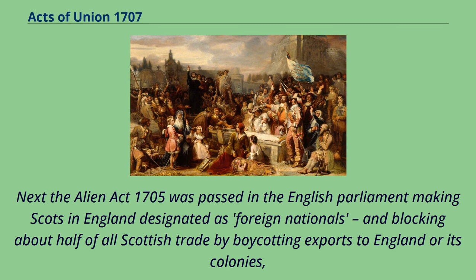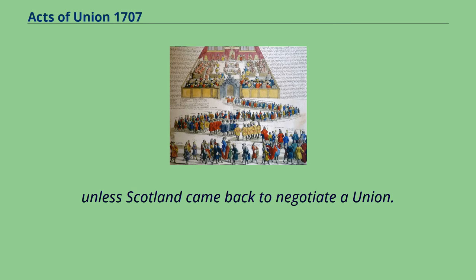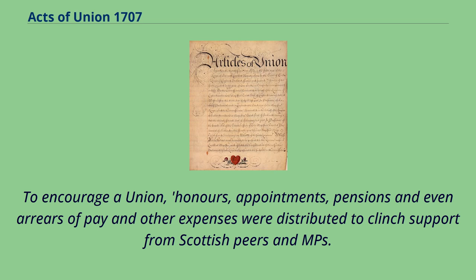The Alien Act 1705 was passed in the English Parliament, designating Scots in England as foreign nationals and blocking about half of all Scottish trade by boycotting exports to England or its colonies, unless Scotland came back to negotiate a union. To encourage a union, honours, appointments, pensions, and even arrears of pay and other expenses were distributed to clinch support from Scottish peers and MPs.